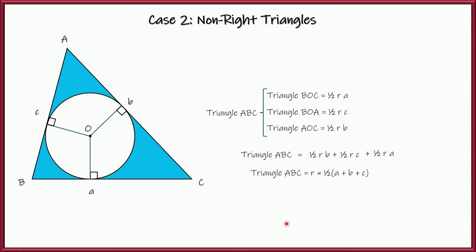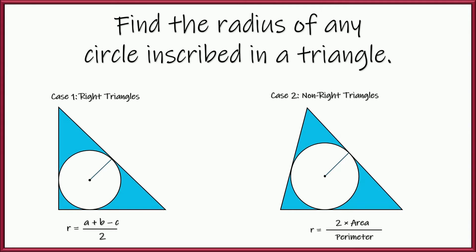So the area is equal to R times one-half of the perimeter. Do you see? A plus B plus C would be the perimeter. So R, if we solve for R, multiply both sides by two, divide by perimeter, twice the area divided by the perimeter is the radius. Twice the area divided by the perimeter is the radius for a non-right triangle. For a right triangle, A plus B, the legs minus the hypotenuse divided by two is the radius.